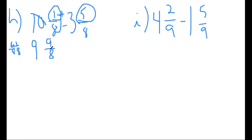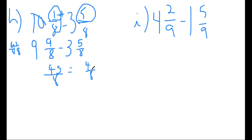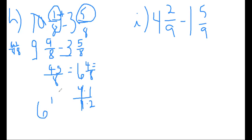Once I borrow, I end up with an improper fraction — nine is larger than eight, so now I can complete the problem. Fraction-wise: nine minus five over eight gives me four over eight. The whole numbers: nine minus three gives me six. So I have six and four over eight. Reducing: four times one is four and four times two is eight — the fours cancel out. Final answer: six and one-half.